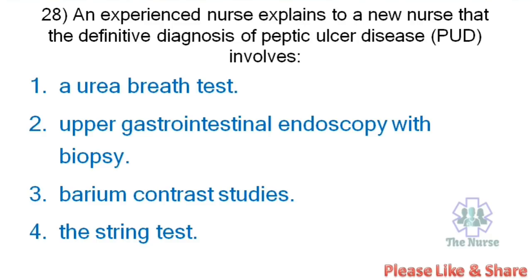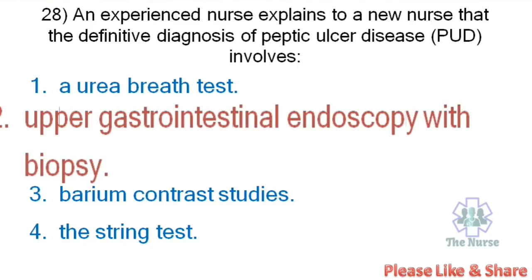Next question: An experienced nurse explains to a new nurse that the definitive diagnosis of peptic ulcer disease involves: a urea breath test, upper gastrointestinal endoscopy with biopsy, barium studies, or the string test. Correct answer: Upper gastrointestinal endoscopy with biopsy — that is the definitive diagnosis for peptic ulcer disease. A urea breath test indicates the presence of Helicobacter pylori, but the definitive diagnostic measure is GI endoscopy with biopsy.